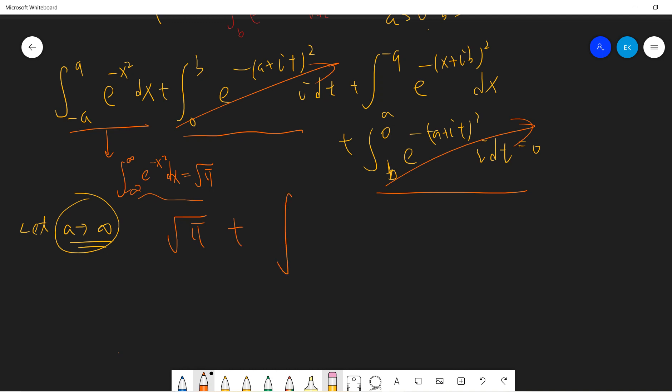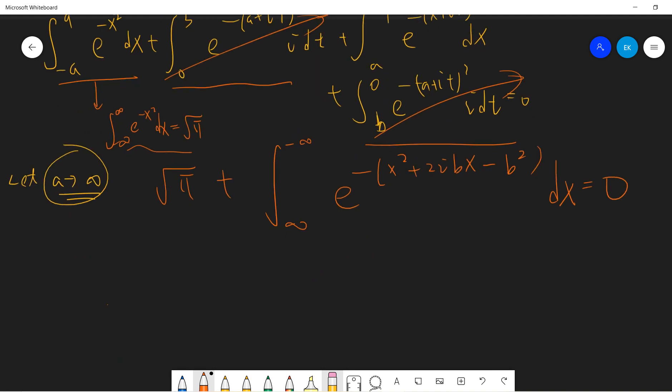What we get is square root of pi plus, as a goes to infinity, from negative infinity to infinity exponential negative (x plus ib) squared dx equals zero. I can change this to infinity to negative infinity and change the direction, so this becomes a minus sign. So we get square root of pi equals exponential b squared times the integral from negative infinity to infinity of exponential negative x squared minus 2ibx dx.